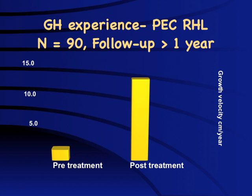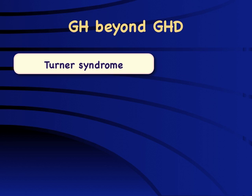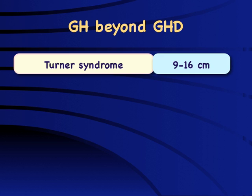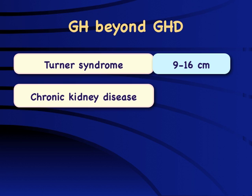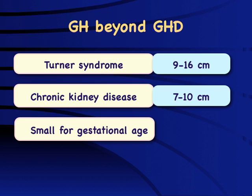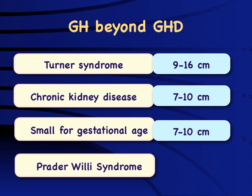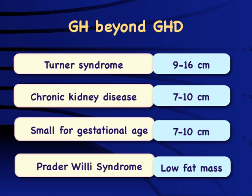At our clinic, we have observed an increased growth response of around 13.5 cm per year with growth hormone therapy. Growth hormone is now being used beyond growth hormone deficiency — Turner syndrome was the first indication, with expected benefit of 9-16 cm; early treatment even in the toddler age group has been effective. For chronic kidney disease, particularly children going for renal transplantation, a benefit of 7-10 cm may be expected. Small for gestational age babies — 20% of whom will not catch up by four years — should be considered for therapy. Prader-Willi syndrome, with growth failure and obesity, responds dramatically to growth hormone with improvement in fat mass.